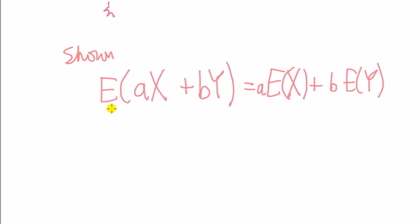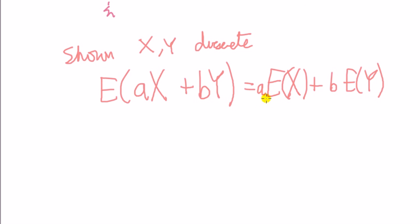So what have we shown? We've shown that for X and Y being discrete, the expected value of a linear combination of X and Y is equal to the sum of the expectations of the individual terms. I've shown the X part here, and you can show the Y part in an identical fashion by just replacing X by Y. Adding the two together gives the full result. End of proof.